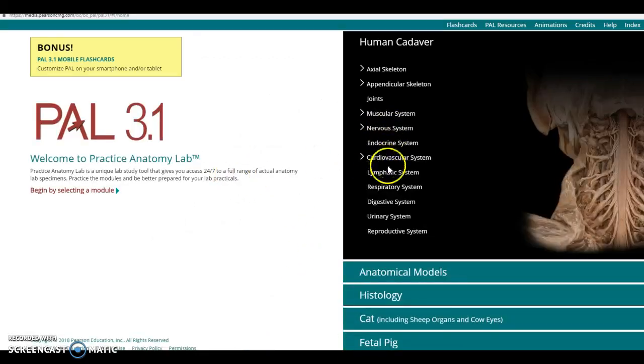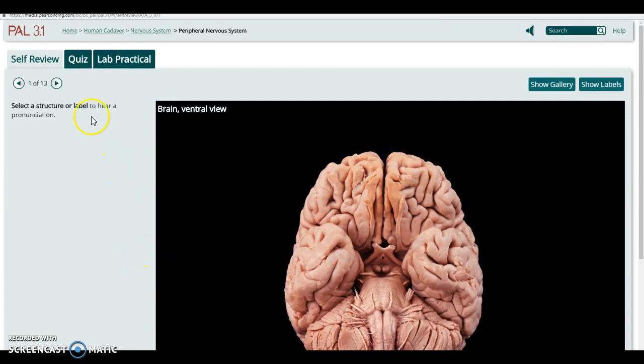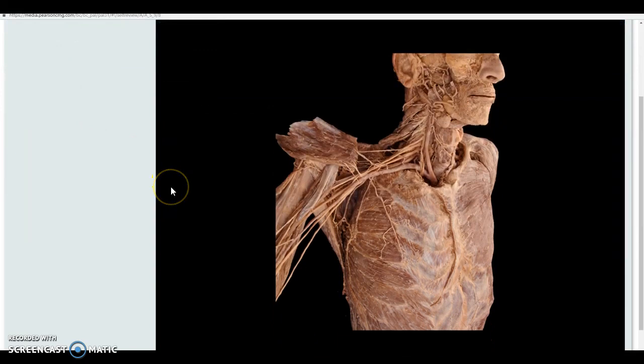in the PAL program, and these are the images you should look at for our exams in the lab, you look at nervous system, you go to the peripheral nervous system, and we're just going to jump through to the one on the upper limb right here, the brachial plexus.